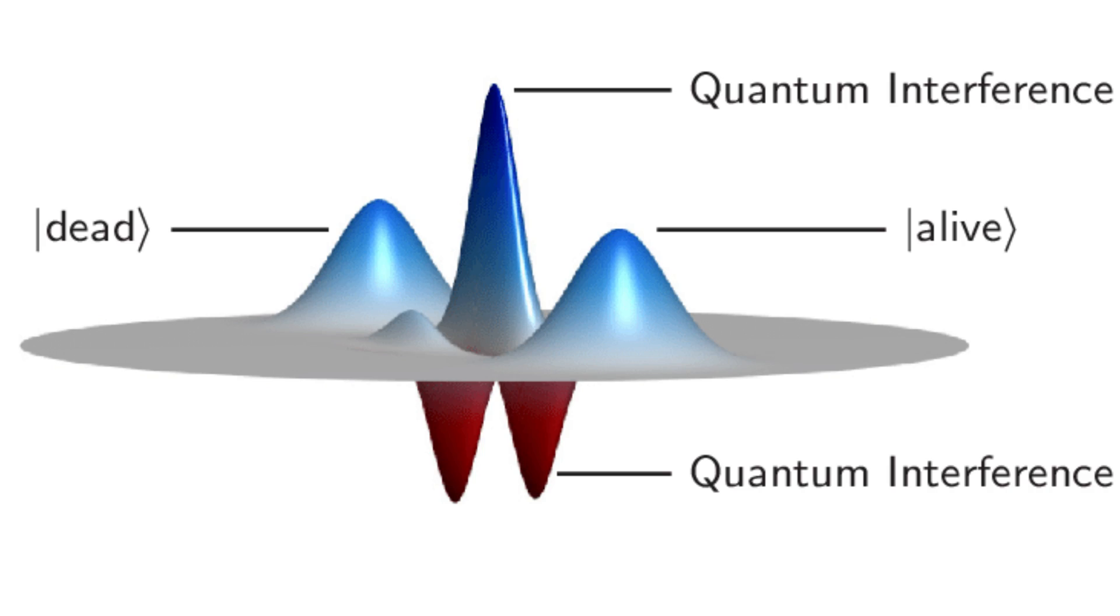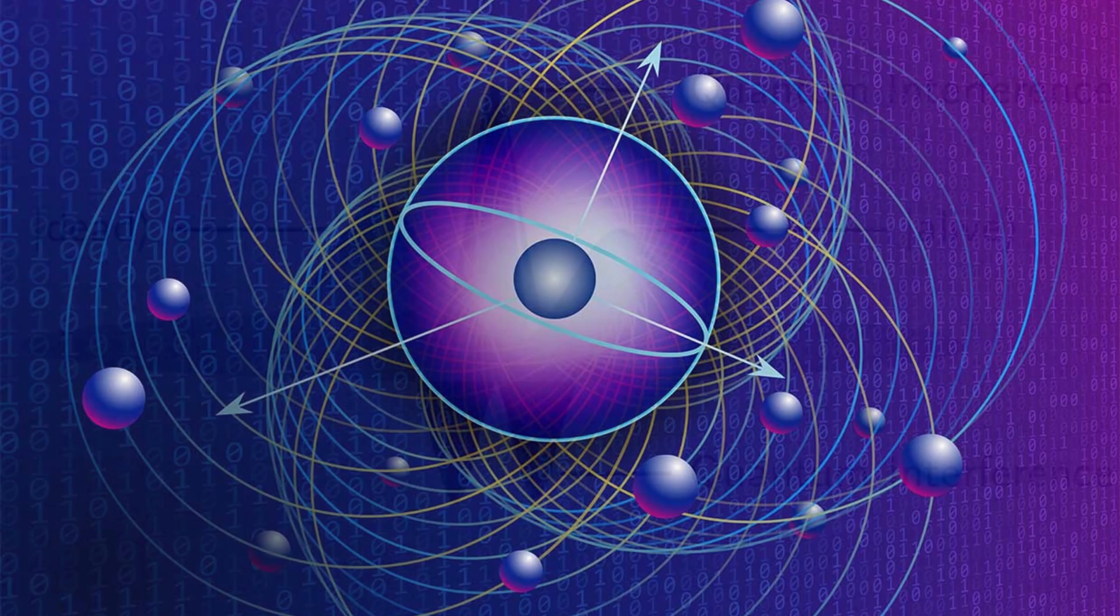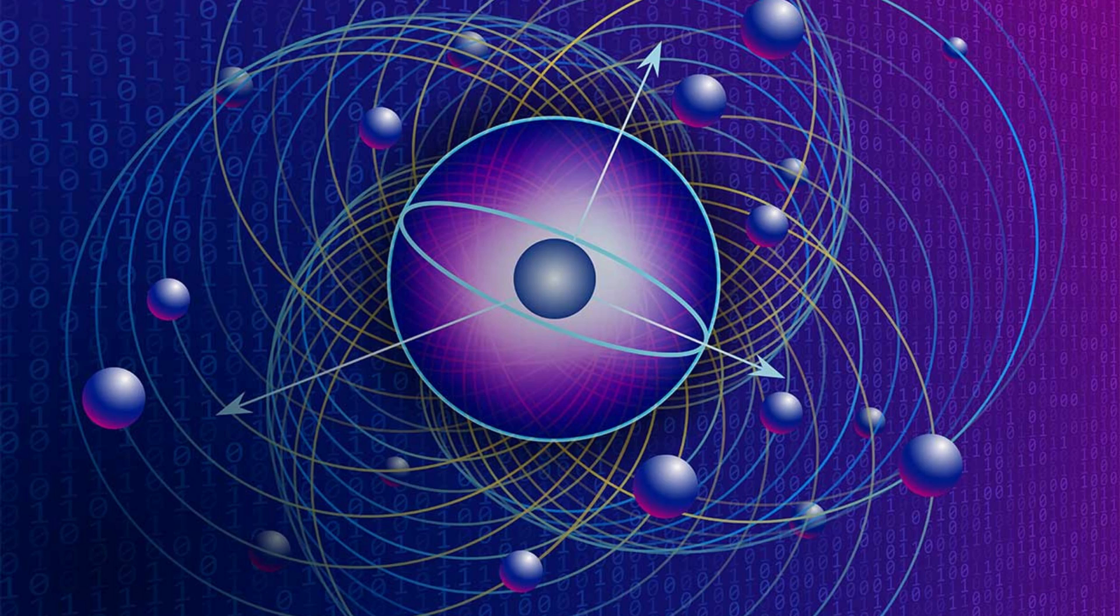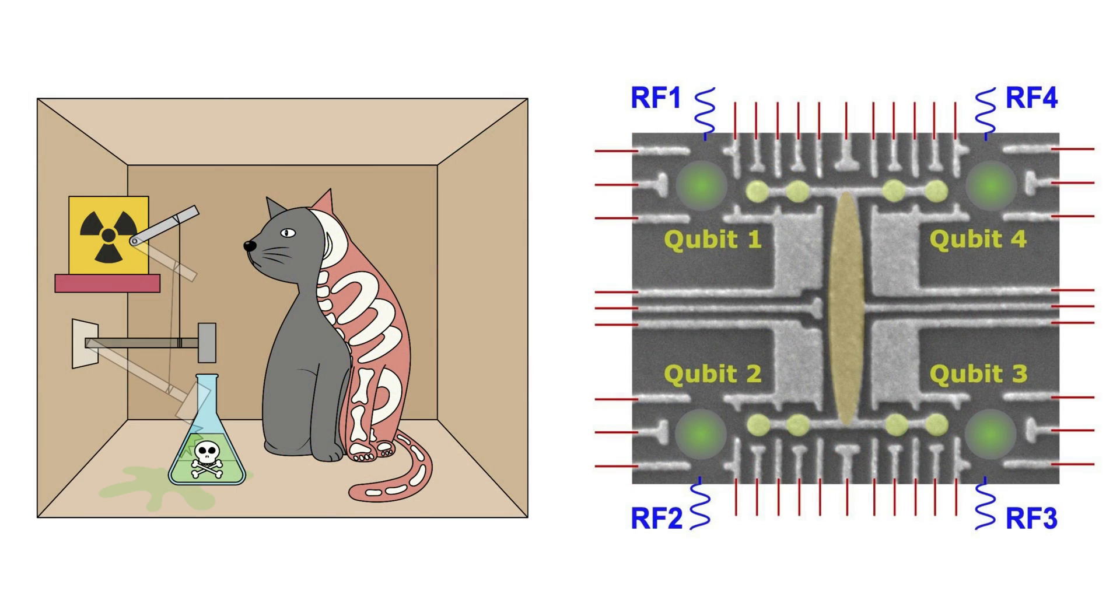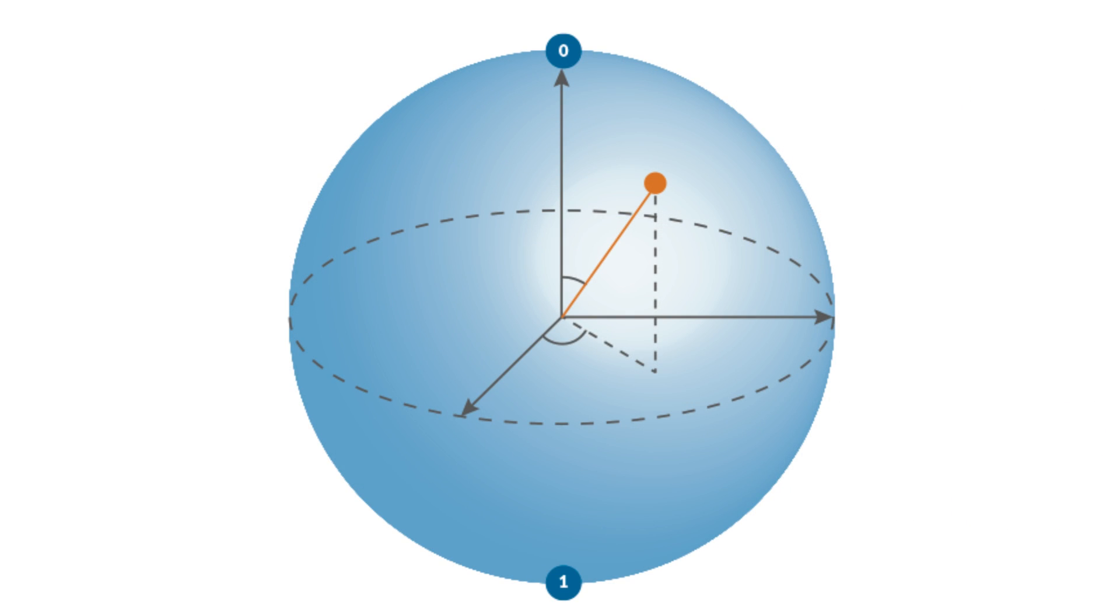This is called superposition of states. In quantum computing, qubits can exist in a similar superposition of states. Instead of a cat, imagine a qubit in a closed box. Until we measure the qubit, it can exist in both 0 and 1 states simultaneously. This means that a quantum computer with 3 qubits can perform calculations on 8 possible states at the same time.